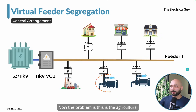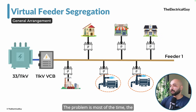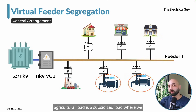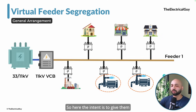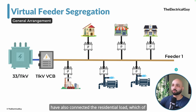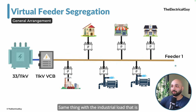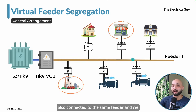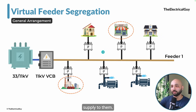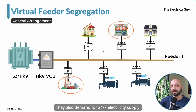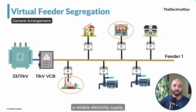We have the agricultural load connected, which most of the time is a subsidized load where electricity is sold at a subsidized cost. The intent is to give them supply of 4 to 5 hours a day. But to the same feeder we have also connected the residential load, which needs 24/7 electricity supply. The industrial load is also connected to the same feeder and cannot be given only 4 to 5 hours of supply either.